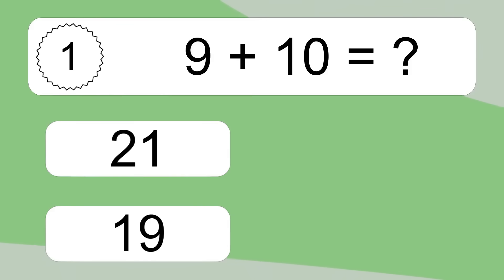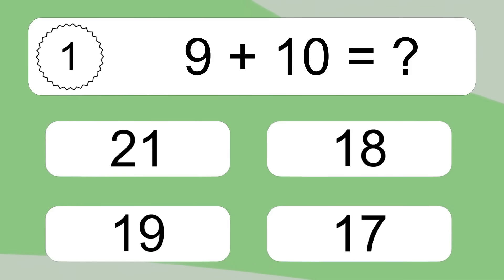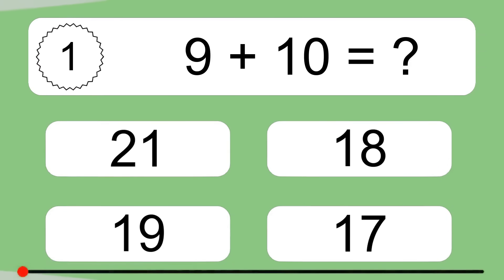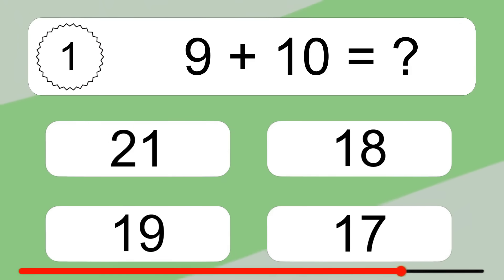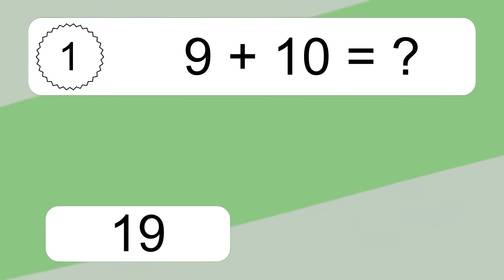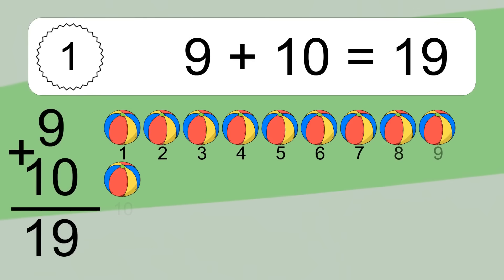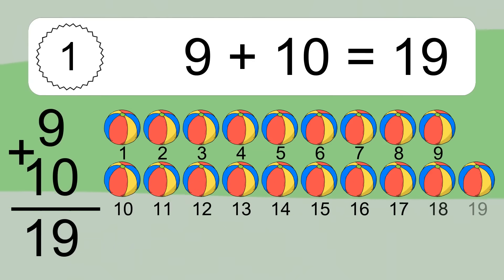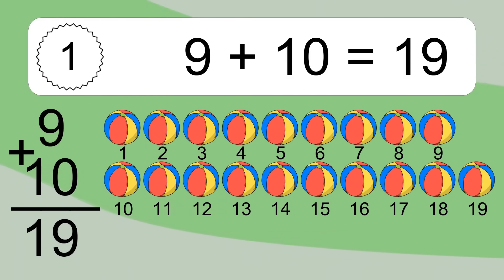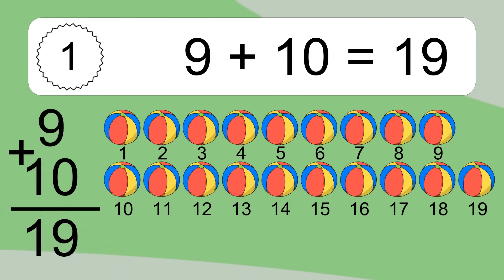9 plus 10 equals what? 9 plus 10 equals 19. Let's count it. 1, 2, 3, 4, 5, 6, 7, 8, 9, 10, 11, 12, 13, 14, 15, 16, 17, 18, 19.